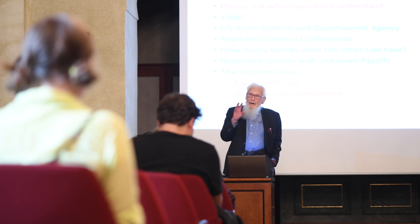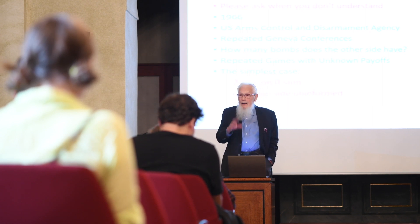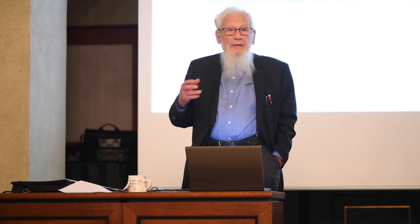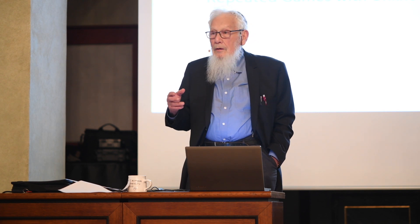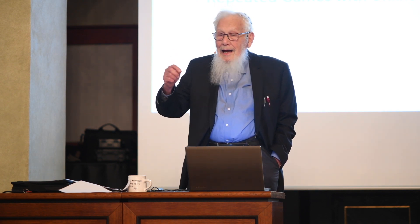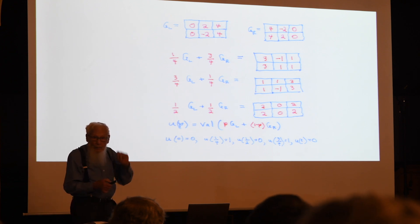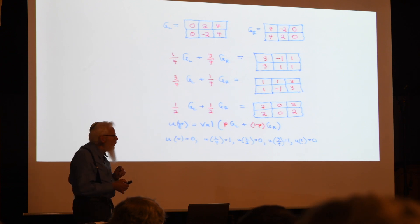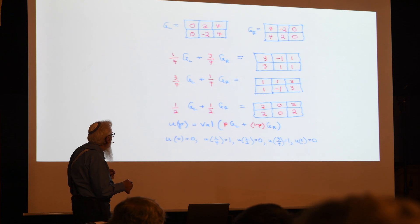This week, the guest of the department was Professor Robert J. Aumann, a renowned Israeli-American mathematician most closely associated with the Hebrew University in Jerusalem. His groundbreaking work in game theory culminated in his receiving the Nobel Prize for Economics in 2005, which he shared with Thomas Schelling.